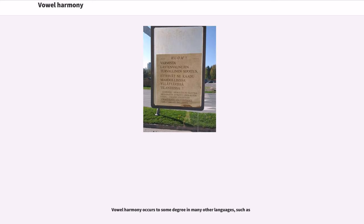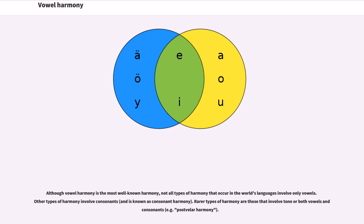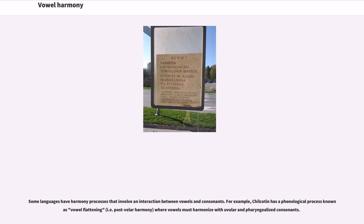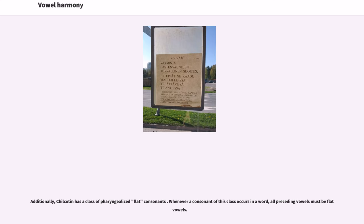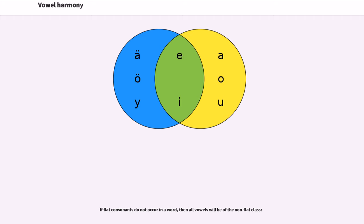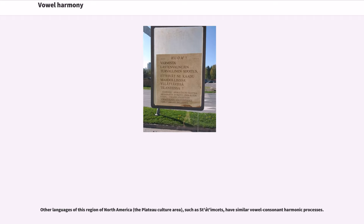Vowel harmony occurs to some degree in many other languages. Although vowel harmony is the most well-known harmony, not all types of harmony that occur in the world's languages involve only vowels — other types involve consonants. Rarer types of harmony involve tone or both vowels and consonants. For example, Chilcotin has a phonological process known as vowel flattening, where vowels must harmonize with uvular and pharyngealized consonants. Chilcotin has two classes of vowels and a class of pharyngealized flat consonants. Whenever a consonant of this class occurs in a word, all preceding vowels must be flat vowels. If flat consonants do not occur, all vowels will be of the non-flat class. Other languages of this region of North America, such as Stl'atl'imx, have similar vowel-consonant harmonic processes.